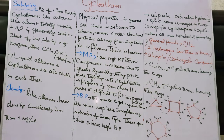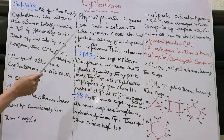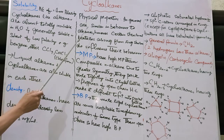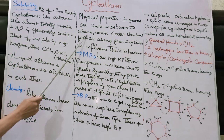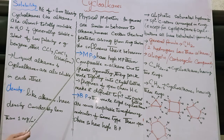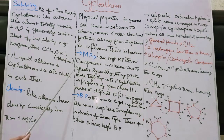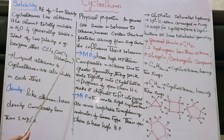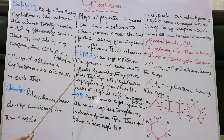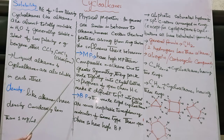Now let's study their physical properties. In general, cycloalkanes are similar in behavior to alkanes, since this class is essentially ring-form alkanes while alkanes are straight-chain. We expect similar behavior, though certain structural features arising from the ring structure do influence their properties.